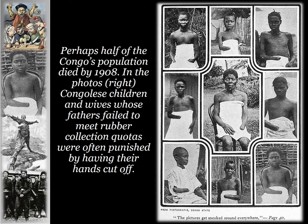Perhaps half of the Congo's population had died by 1908 due to the treatment by Leopold's men in gaining access to raw materials. Congolese children and wives whose fathers failed to meet rubber collection quotas were punished by having their hands cut off. If a father did not harvest the required amount of rubber, the hands of his children or wife — not his own, because he needed his hands for work — would be cut off as punishment. Many millions of people were maimed.